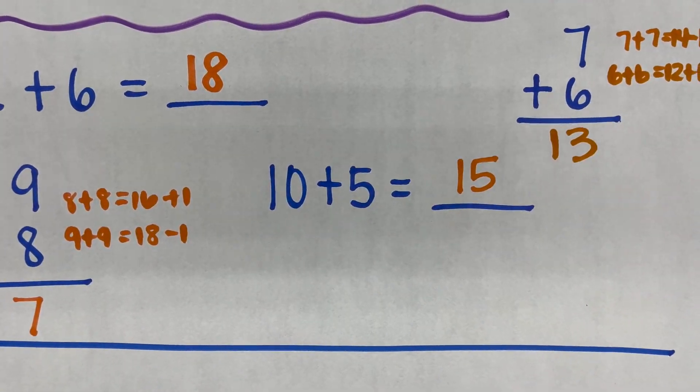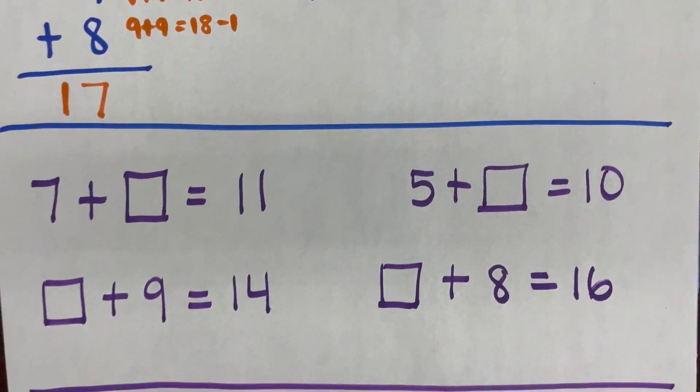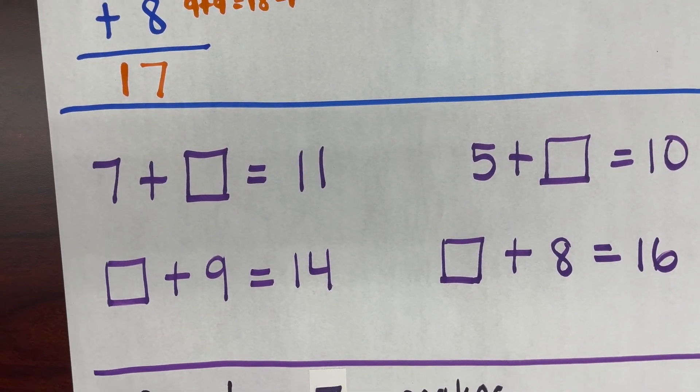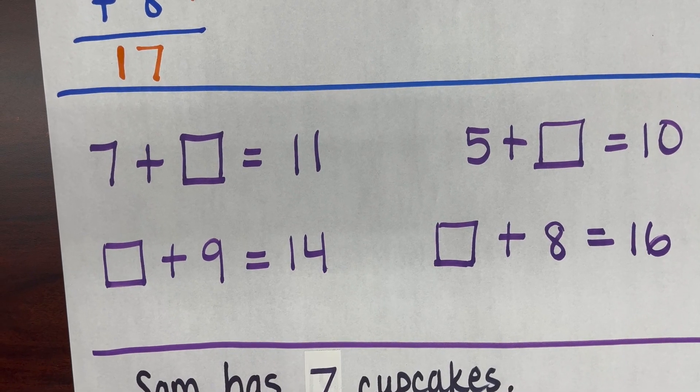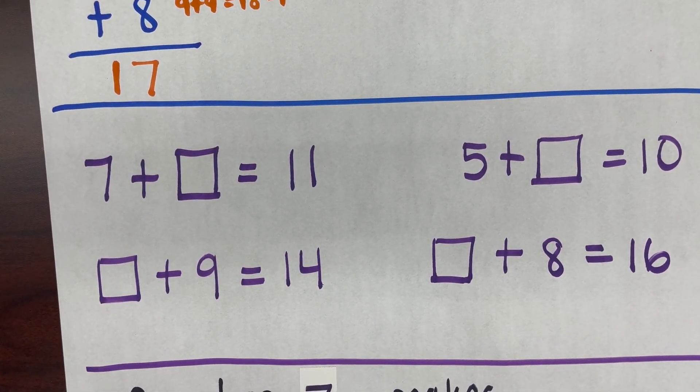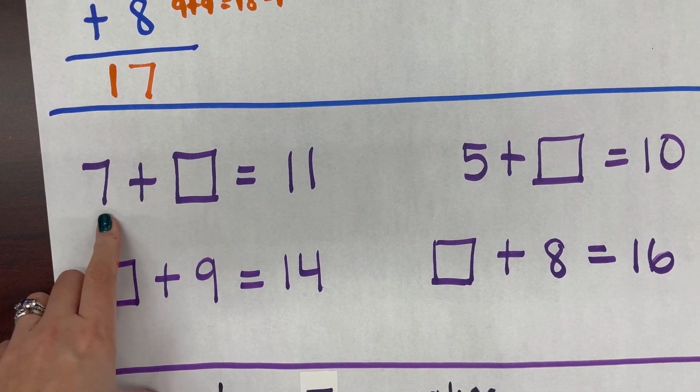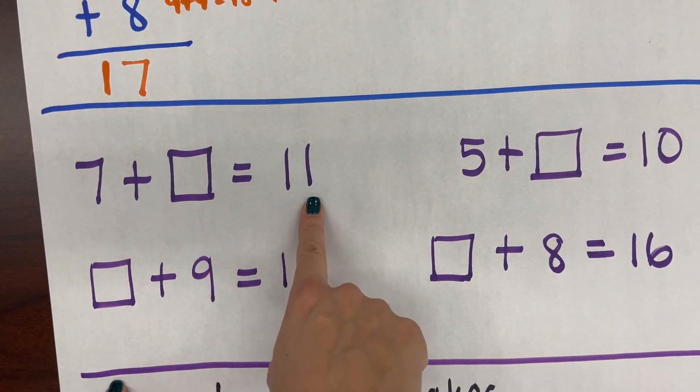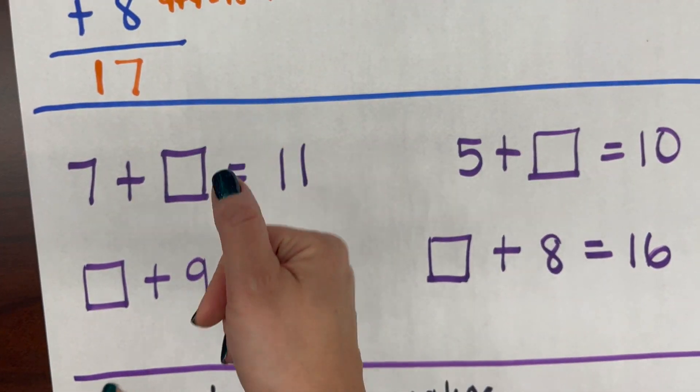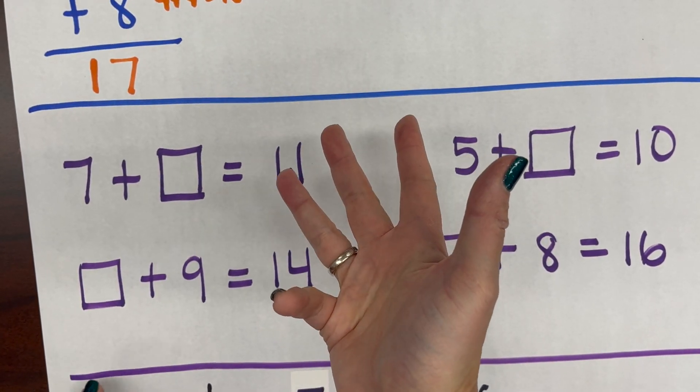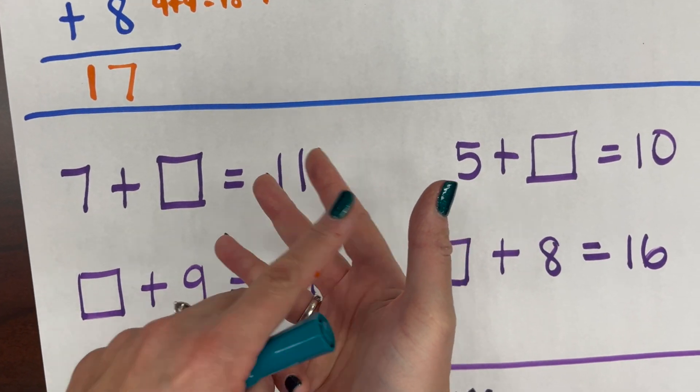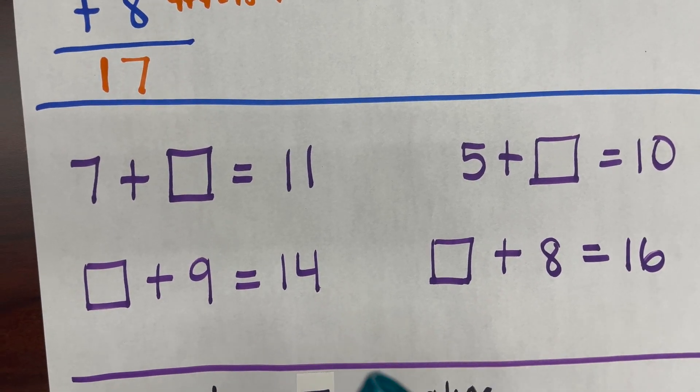Moving on to the missing addend component, students see this at the beginning of second grade. This is a large part of our first grade curriculum, so just as a quick review, I might grab 7, hold it in my head and count on until I got to 11. So 7, 8, 9, 10, 11. My missing number would be 1, 2, 3, 4. So I would put 4 in here.